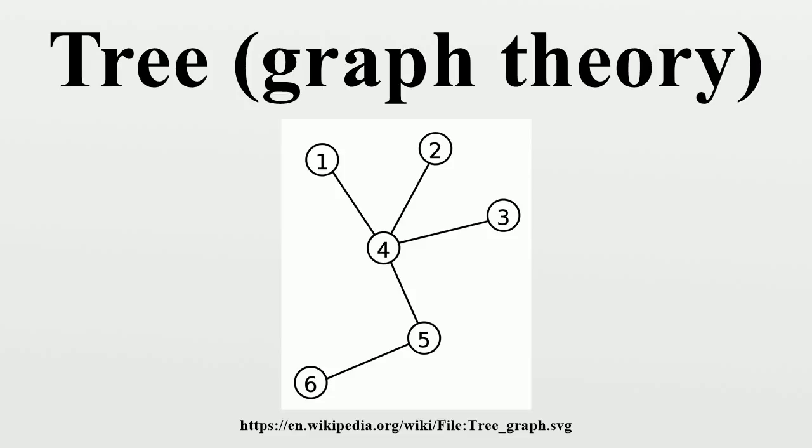An internal vertex is a vertex of degree at least 2. An irreducible tree is a tree in which there is no vertex of degree 2. A forest is an undirected graph all of whose connected components are trees. In other words, the graph consists of a disjoint union of trees. Equivalently, a forest is an undirected cycle-free graph.